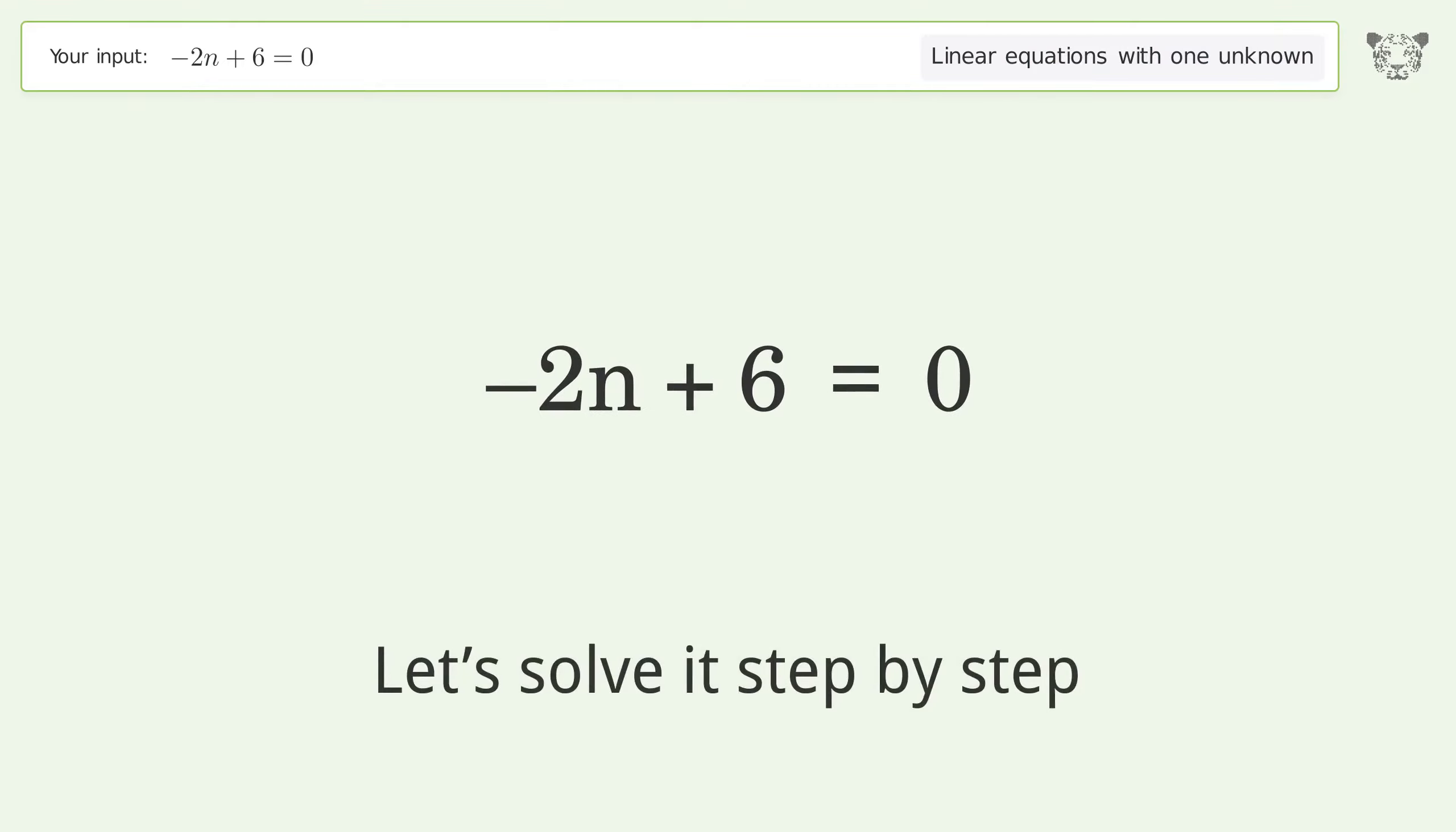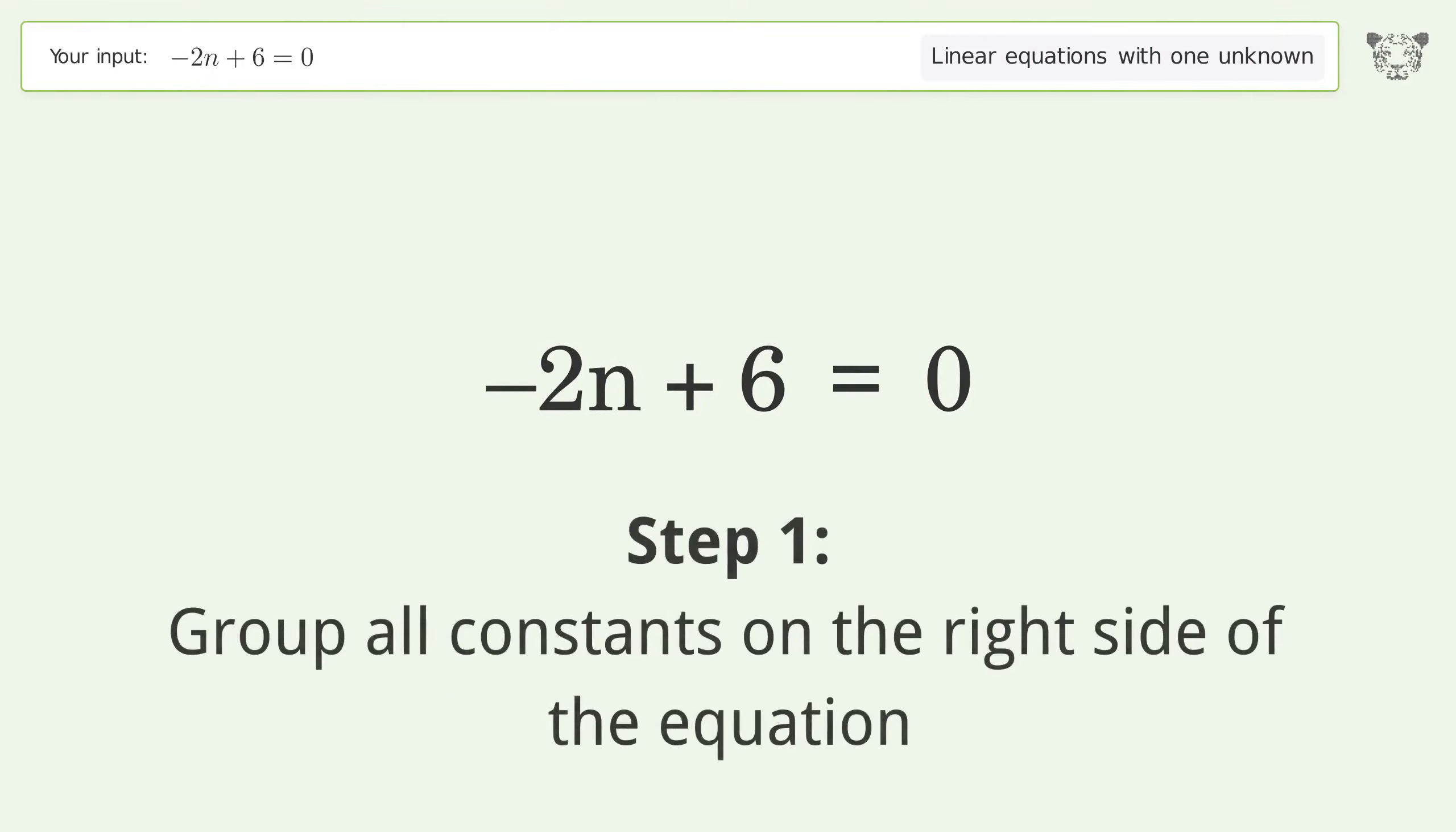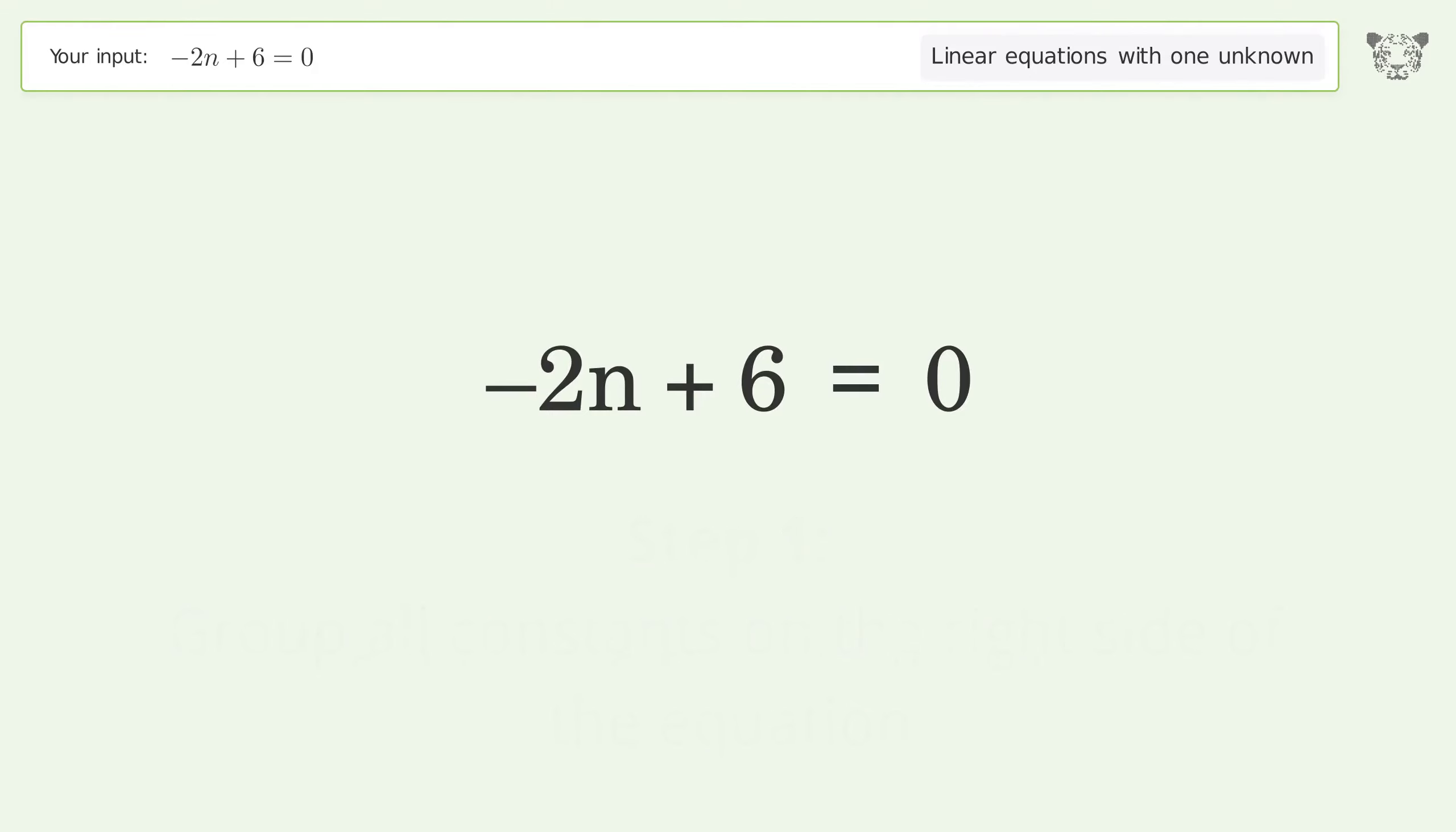Let's solve it step by step. Group all constants on the right side of the equation. Subtract 6 from both sides. Simplify the arithmetic.